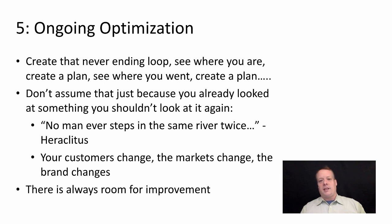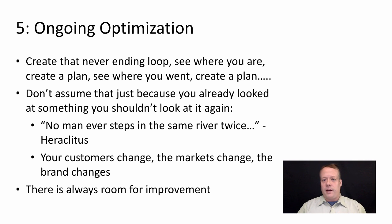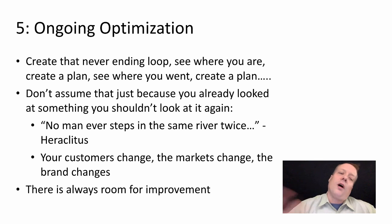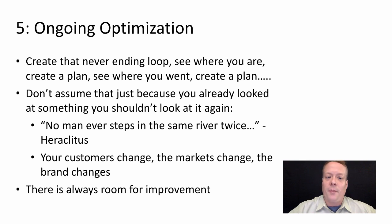Finally, after you've put all this together and come up with your plan, you need to specify how you're going to do ongoing optimization. You're going to create that never-ending loop: see where you are, create a plan, see where you are, create a plan, and so on. Don't assume that just because you already did digital marketing research on a particular context that you never need to do it again.